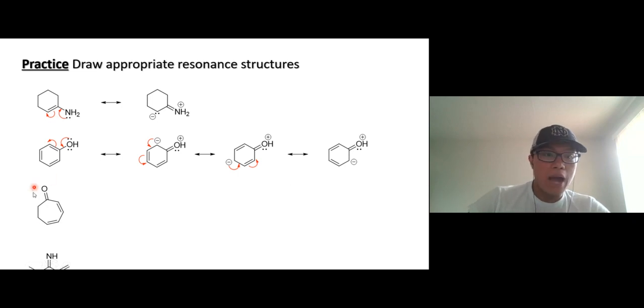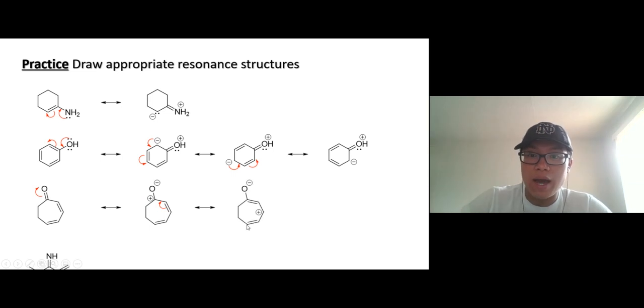Come down here. There's no lone pair to draw, but what do you see? You see a double bond between two atoms with different electronegativity. Obviously oxygen will pull the pi electron to itself, creating a carbocation. Now we have a double bond next to a carbocation, so draw a resonance arrow. Another double bond next to the carbocation, another one, another one. DJ Khaled.